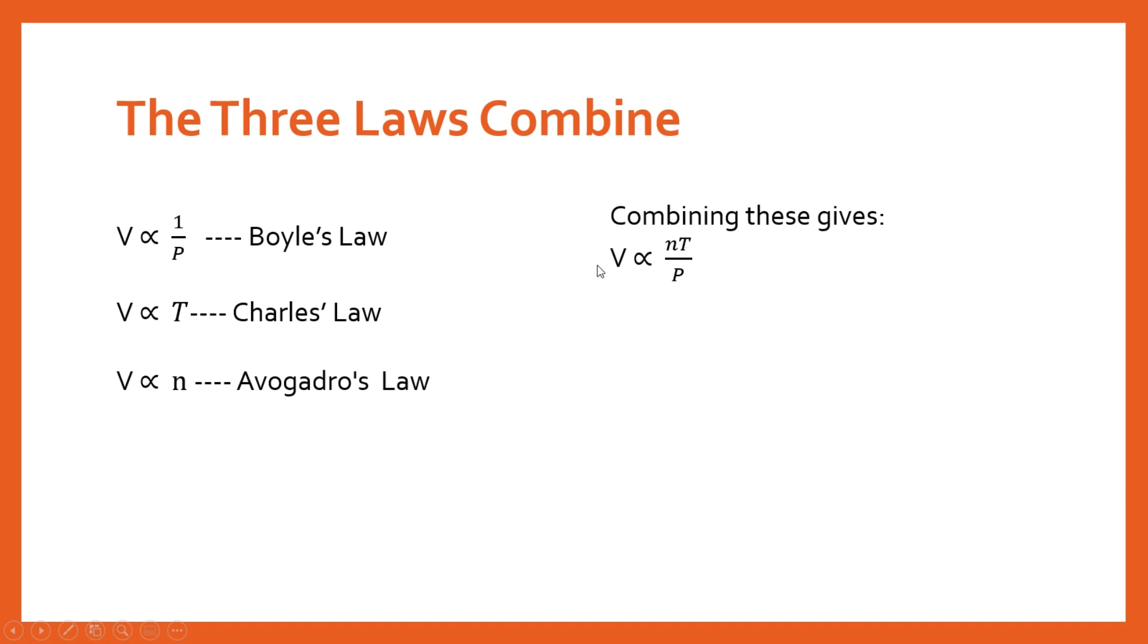This is a proportionality relationship. And if we want to turn it from being proportional to being equal, we have to introduce a constant. And the constant is R. So volume is actually equal to R times this expression. And R is your gas constant. And so we can write the equation, as you may be familiar, as PV equals nRT. This is one form of the ideal gas law.